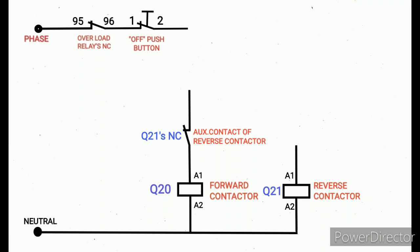The Q20 A1 contactor coil terminal A1 is connected through Q21's auxiliary contact NC. The A2 is connected with Q20's NC. This is the interlock connected with both contactors, forward and reverse. The forward contactor connected with reverse contactor's NC, then reverse contactor connected with forward contactor auxiliary contact NC.